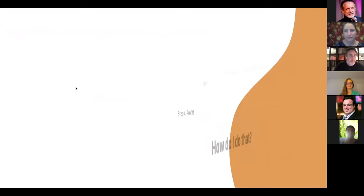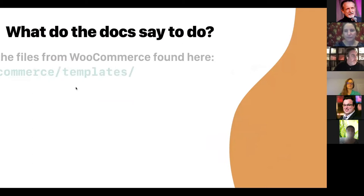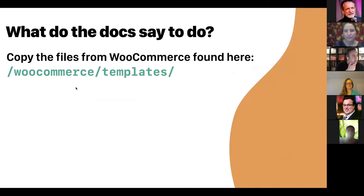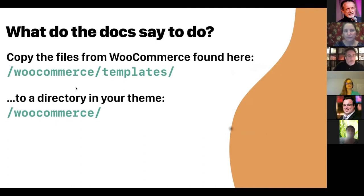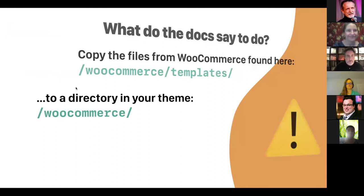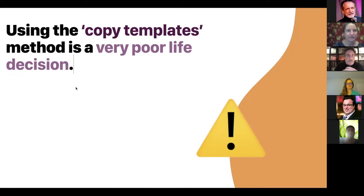What do the docs say to do? If you look at the WooCommerce docs, what they tell you to do is copy the files from the WooCommerce plugin, which are found in woocommerce/templates, and then create a directory in your theme called WooCommerce and copy everything in there. If you've worked on a WooCommerce site before, you'd probably use this method. I just want to say it's a bad idea — I'm going to call this the copy templates method, and this is a very poor life decision.